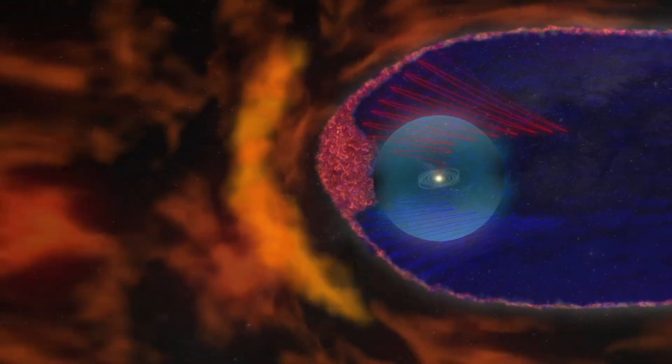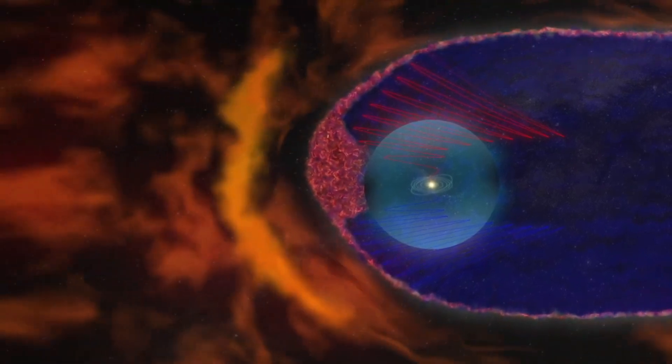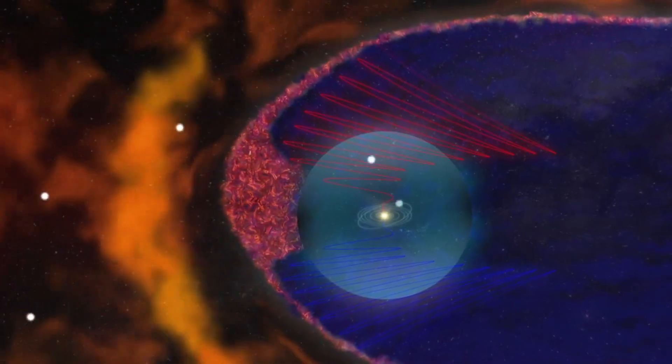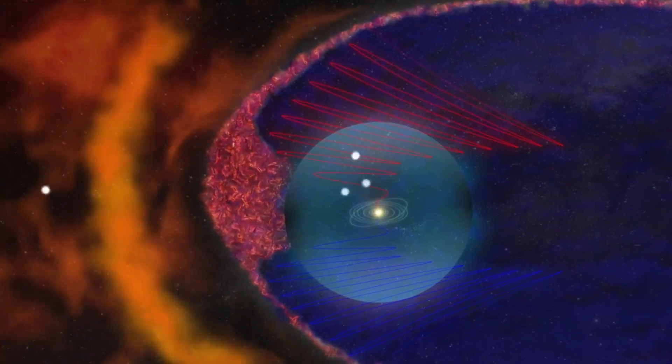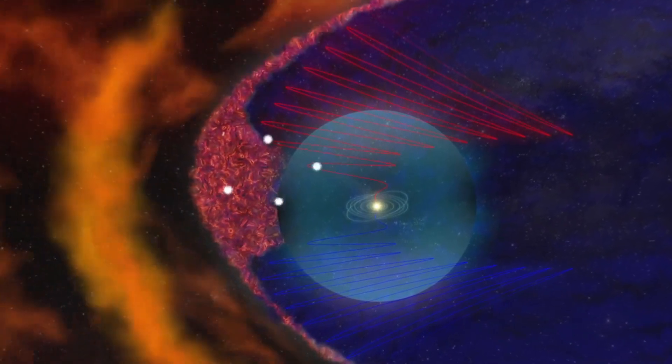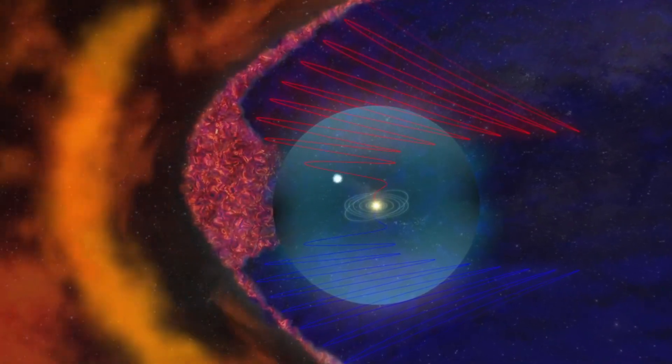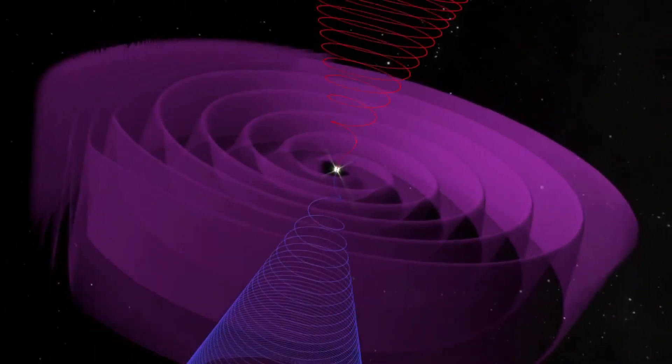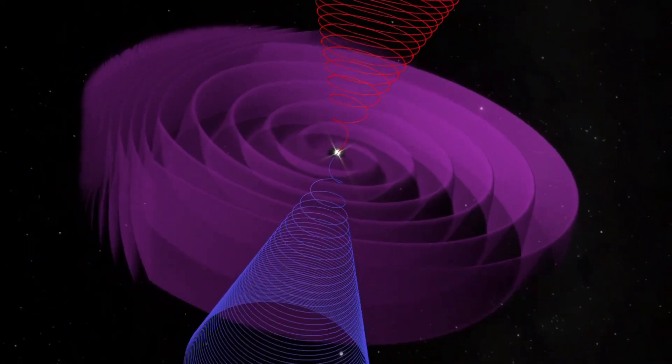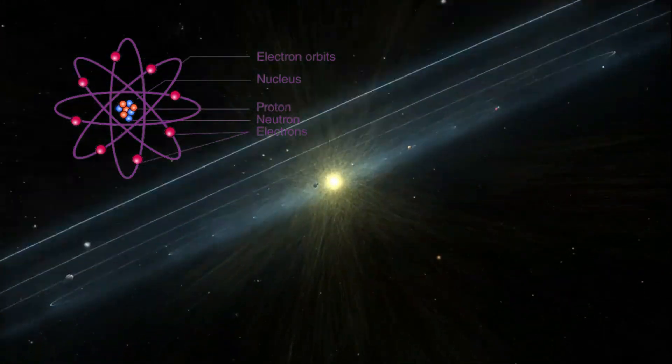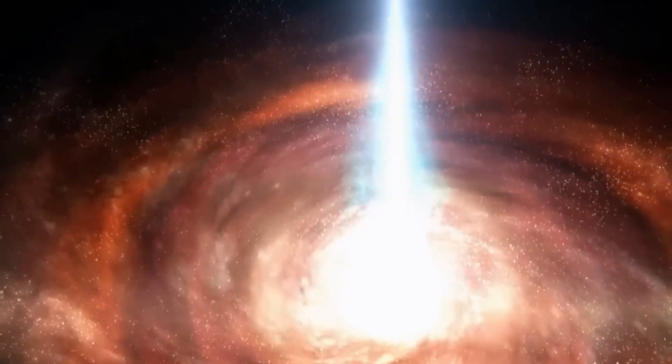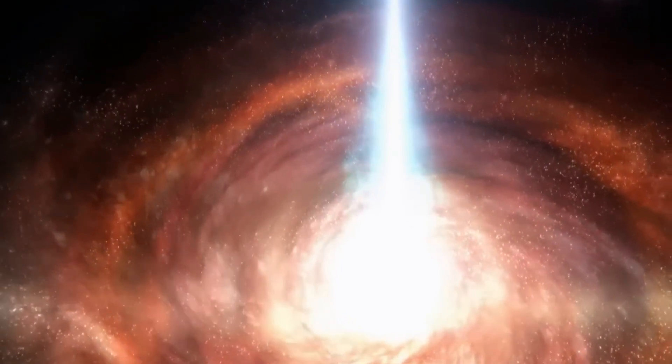When we talk about the Fermi and Erosita bubbles, it's essential to understand the role of cosmic rays, high-energy particles traveling at nearly the speed of light. These particles can be generated by a variety of cosmic phenomena, and in the case of the bubbles, cosmic rays might be a critical component in their formation and ongoing activity. Cosmic rays are primarily composed of protons and atomic nuclei that have been accelerated by the powerful forces at play in the universe.